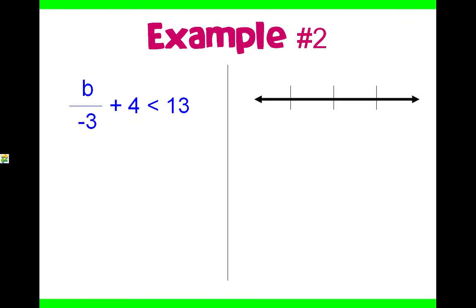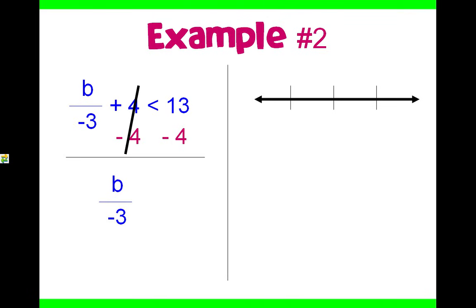Example number 2: b divided by negative 3 plus 4 is less than 13. In this problem, we have negative 3 to get rid of and 4. We're going to get rid of the adding and subtracting step first because it's easier to do so. We are going to subtract 4 to get rid of plus 4. What you do to one side, you do to the other. Opposites cancel out, leaving us with b divided by negative 3 on the left. We did not multiply or divide by a negative number, so we can bring down our inequality sign.